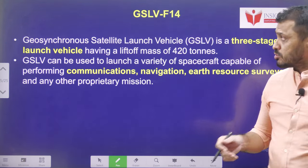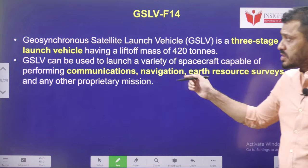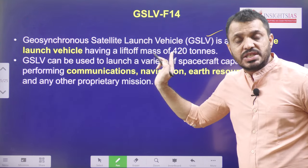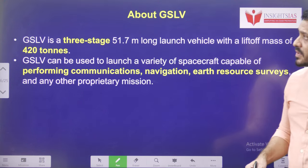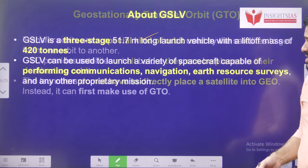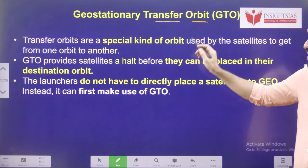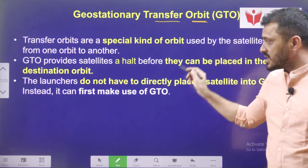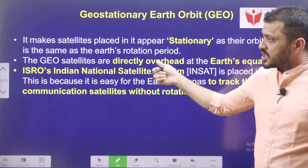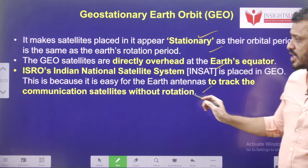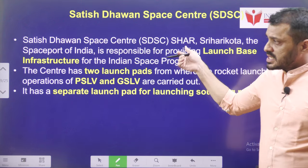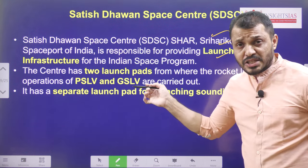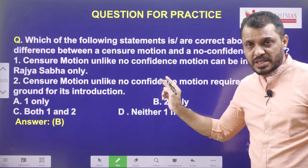GSLV F-14 is the Geosynchronous Satellite Launch Vehicle. It includes three stages. GSLV mainly runs on cryogenic fuel. The geostationary transfer orbit is a temporary orbit before going to the geostationary earth orbit. GEO is generally at a range of 35,000 to 36,000 kilometers. Satish Dhawan Space Centre is located in Sriharikota, Andhra Pradesh — from where both PSLV and GSLV launches are conducted.